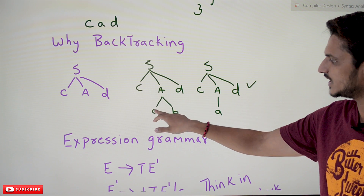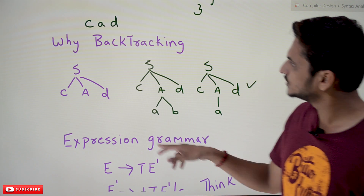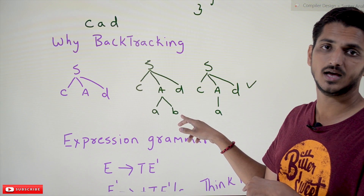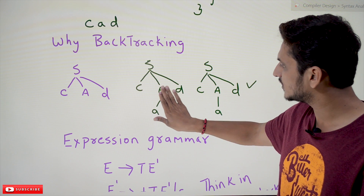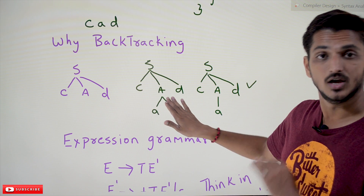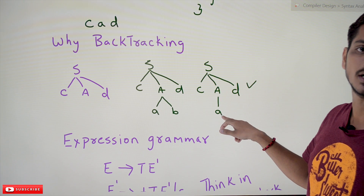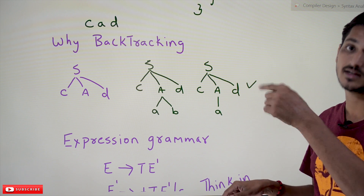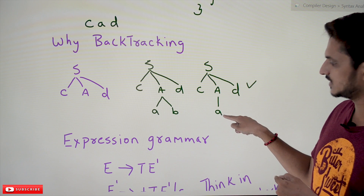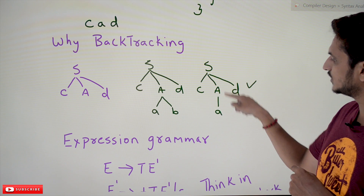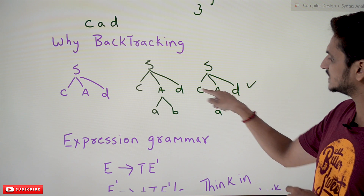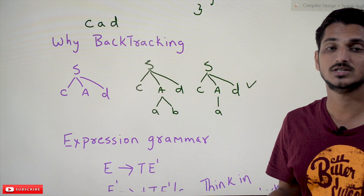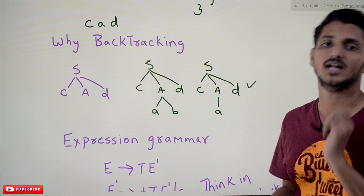A is expanded with production A tends to a b. Our input is 'cad', so a matches, but b does not match. The chosen production is wrong, so we go back and try the other production: A tends to b. Wait — A is then tried with just 'a'. Now c and a are identified, then d is identified. The grammar accepts the input string. This is how syntax analysis works.